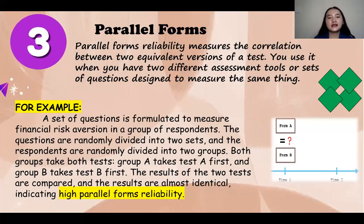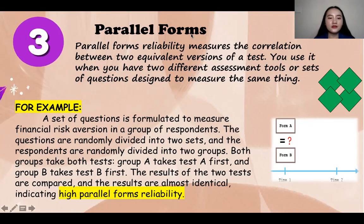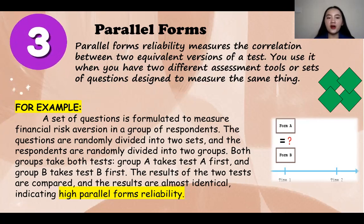So for instance, a set of questions is formulated to measure financial risk aversion in a group of respondents. So the questions are randomly divided into two sets. So the respondents are also randomly divided into two groups. So both groups take both the tests. So we have group A takes the test A first and the group B takes the test B.